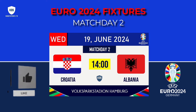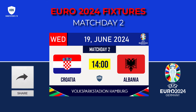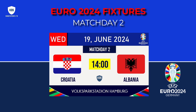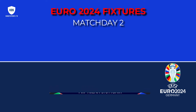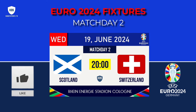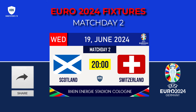On 19 June 2024: Croatia vs Albania, kick-off time is 1400 GMT and 2 o'clock UK time. Germany vs Hungary, kick-off time is 1700 GMT and 5 o'clock UK time. Scotland vs Switzerland, kick-off time is 2000 GMT and 8 o'clock UK time.